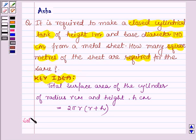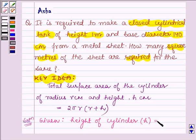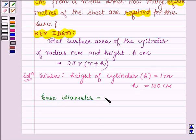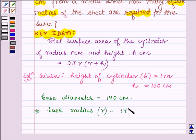Let us now start with the solution. Here we are given height of cylinder. Let us denote it by h equals 1 m, and since 1 m equals 100 cm, therefore we have h equals 100 cm. Also we are given that base diameter equals 140 cm. So this implies that base radius, denoted by r, equals 140 cm upon 2, which equals 70 cm.